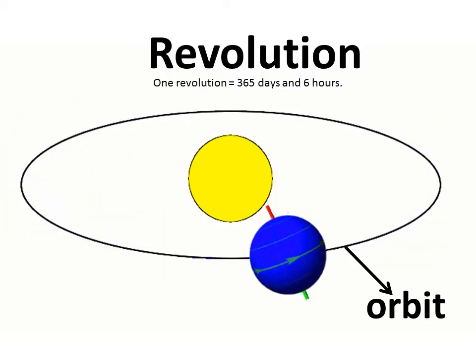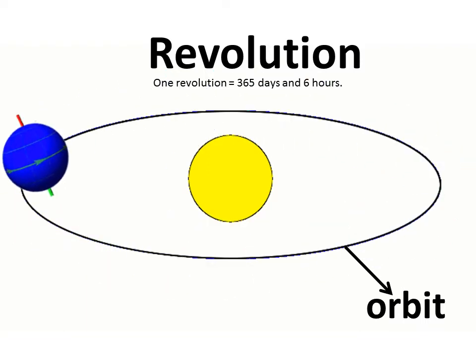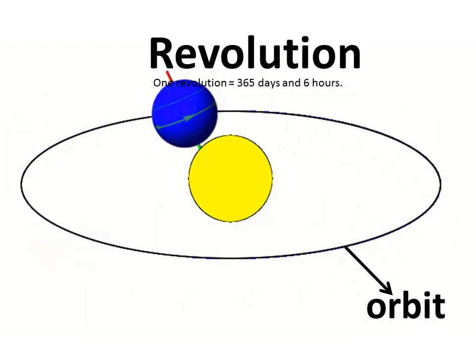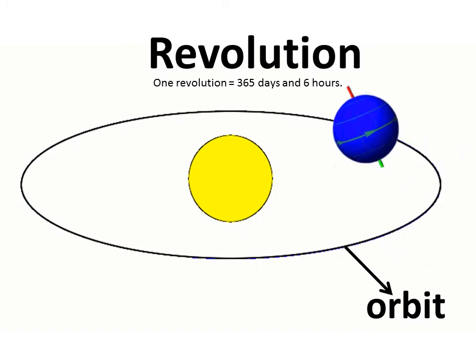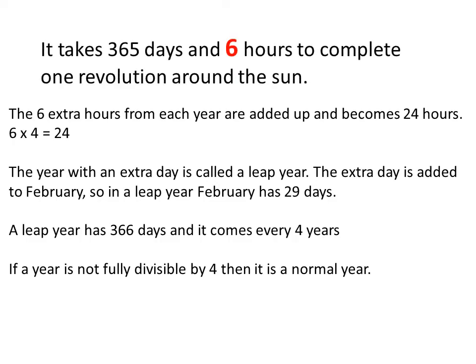It takes 365 days and 6 hours to complete one revolution around the sun. This is why a year usually has 365 days, and the 6 extra hours from each year are added. In the 4th year, it becomes 24 hours, which is equal to 1 day. Every 4th year, this extra day is added to the year. The year with an extra day is called a leap year.